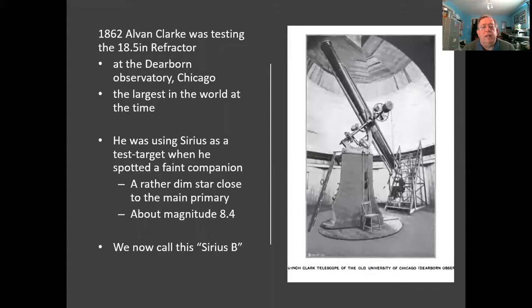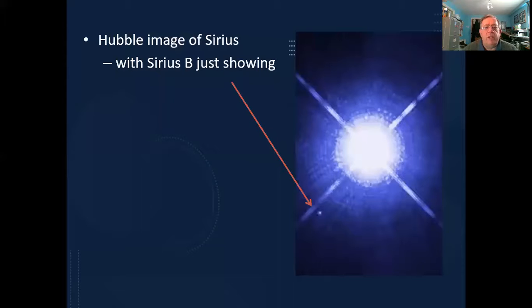So this little companion is now called Sirius B. Here's a picture of Sirius B next to the main star. The main star's glowing white hot there, imaged by the Hubble Space Telescope, and you can just pick out the little tiny companion. As I say, 10 magnitudes fainter, which corresponds to a factor of 10,000 less in brightness.